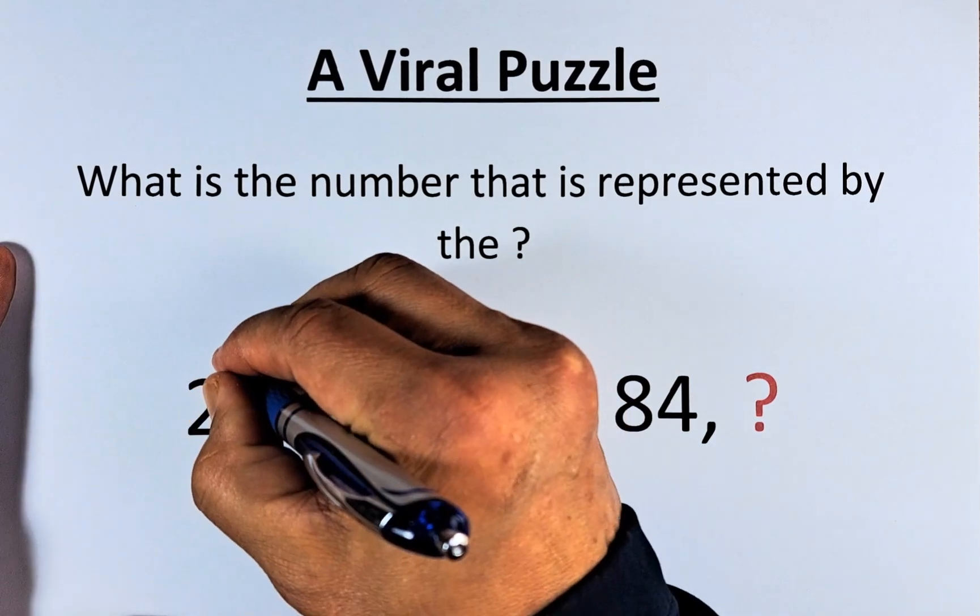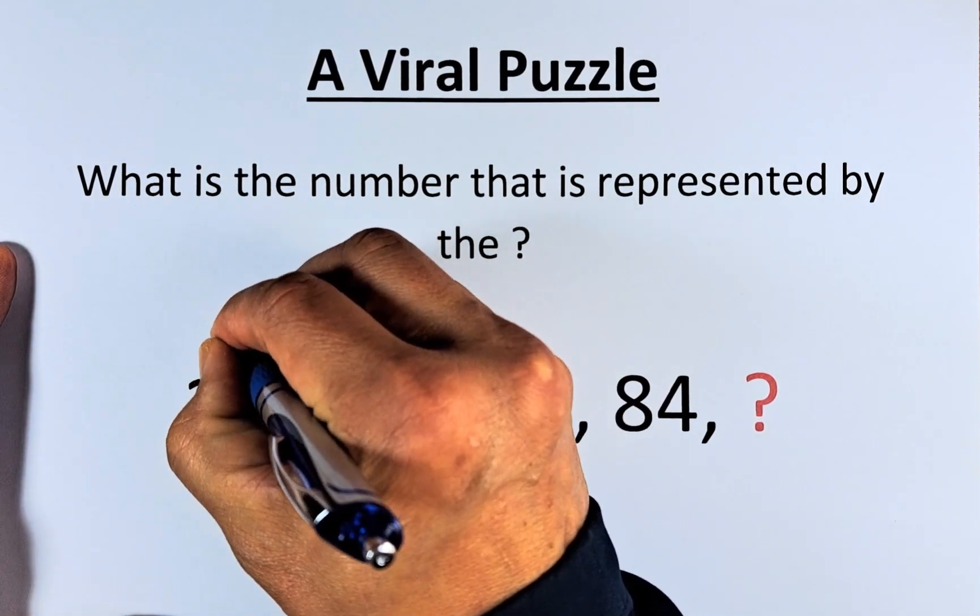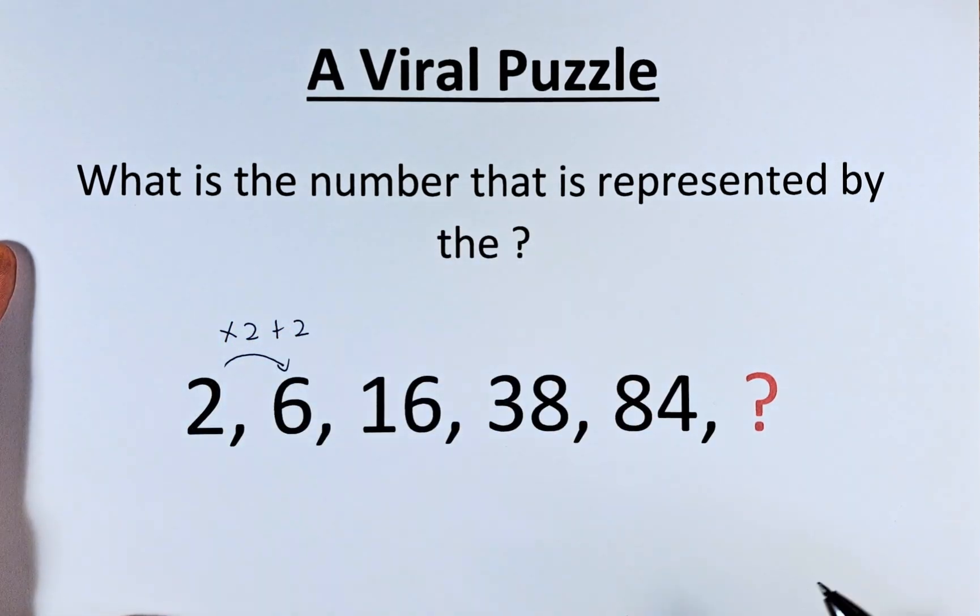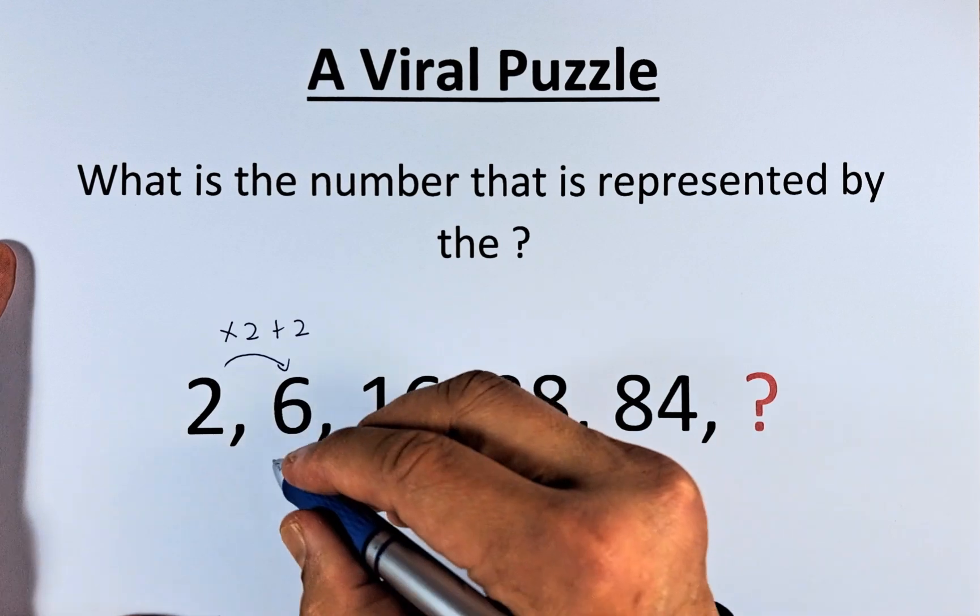To get from 2 to 6, we are going to multiply by 2 and then add 2. So 2 times 2 is 4, 4 plus 2 and we get 6.